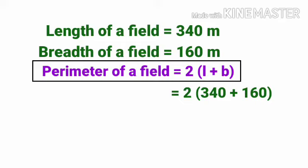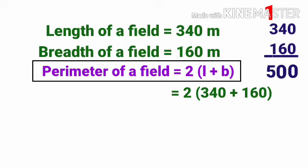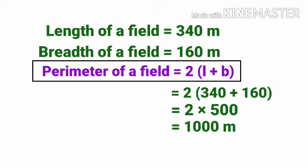Equals 2 into 500. 340 plus 160: 0 plus 0 is 0, 4 plus 6 is 10 carry 1, 3 plus 1 plus 1 is 5, so 500. 2 into 500 equals 1000 meter. For 2 rounds, 1000 into 2 equals 2000 meter. The distance covered is 2 kilometers.